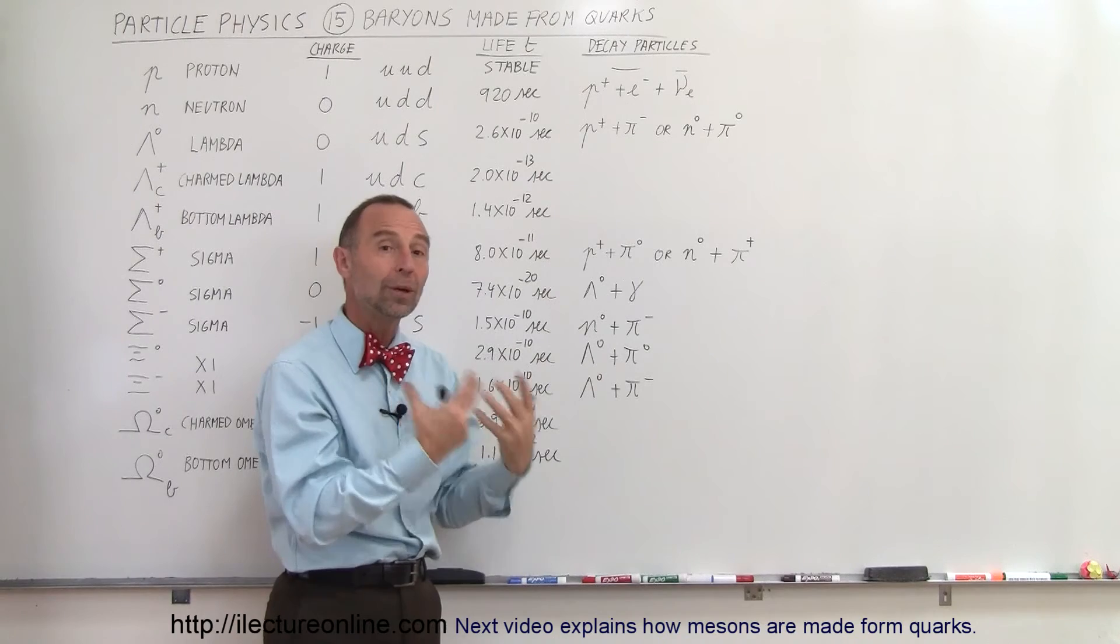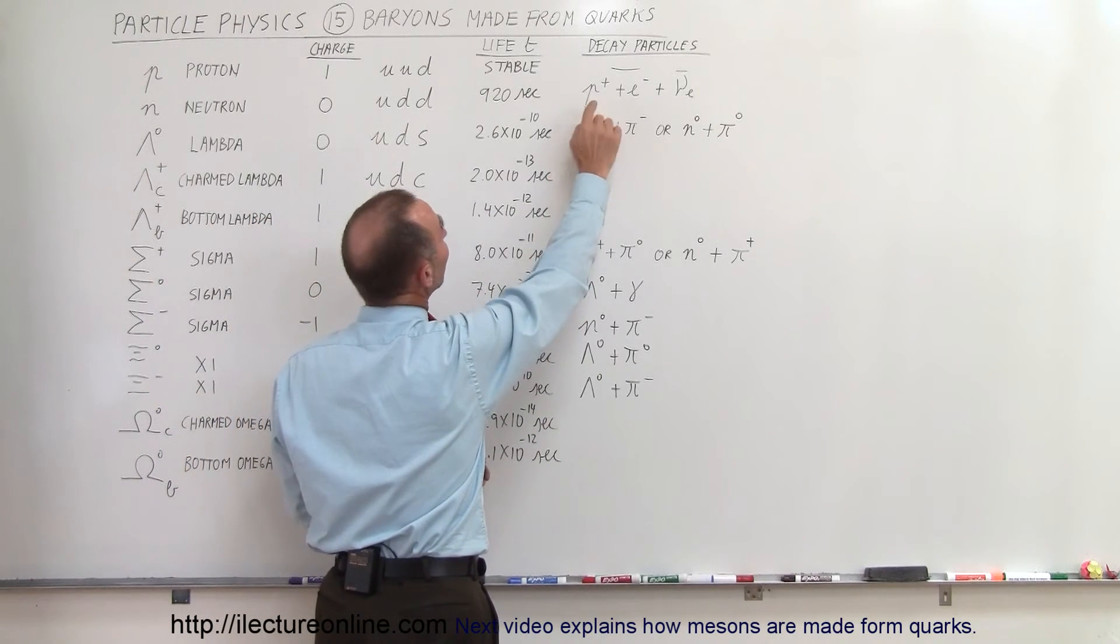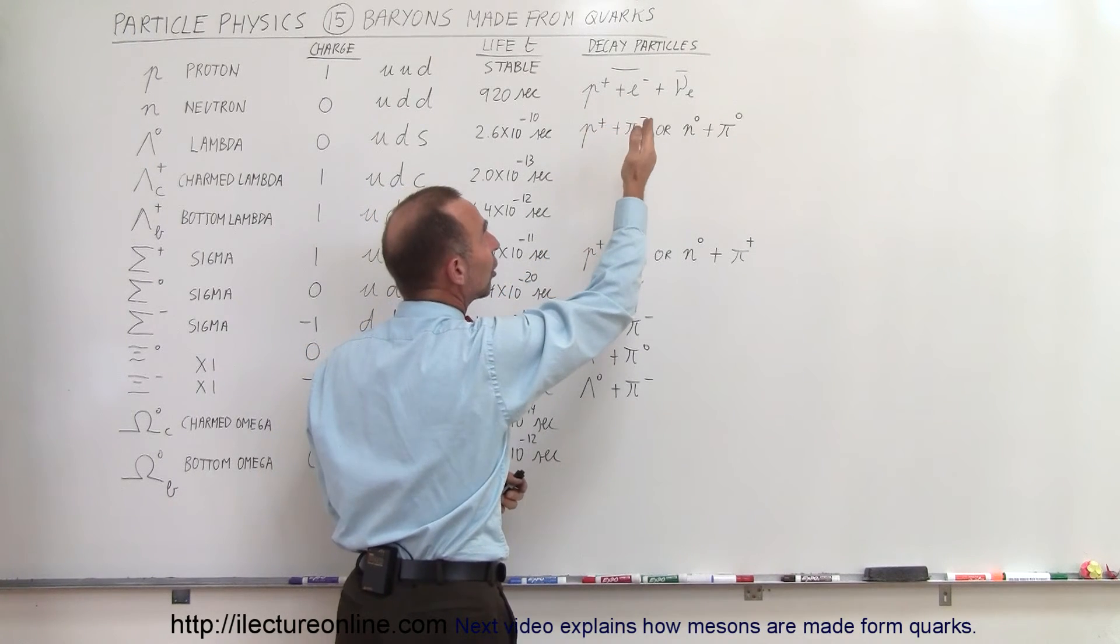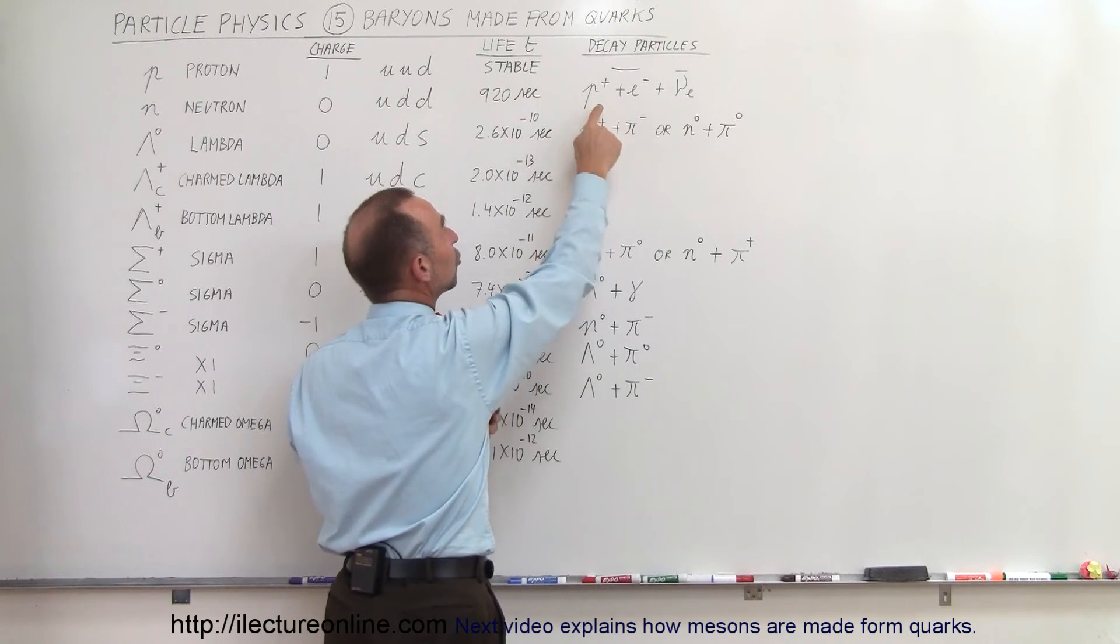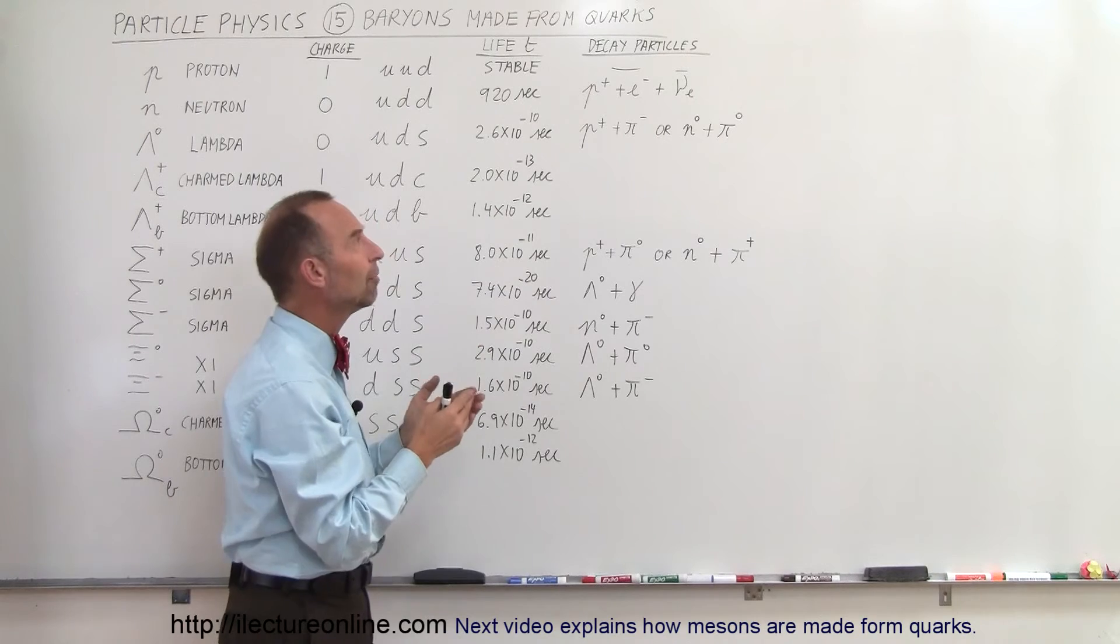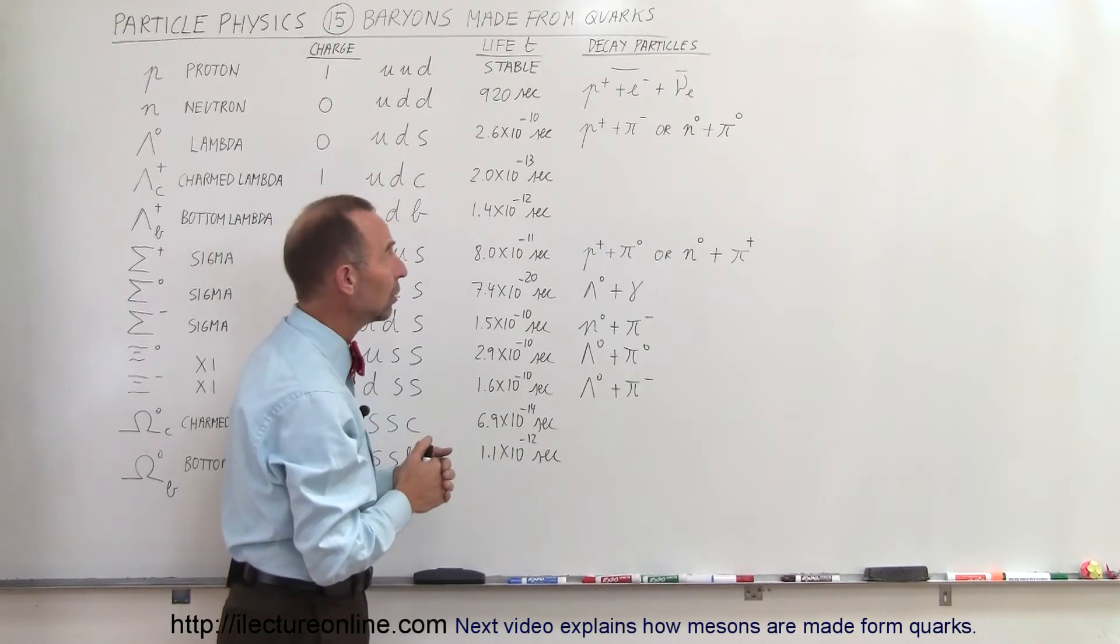For example, when a neutron decays, it forms a proton. It shoots out the negative charge from the neutron so that the neutron becomes a positively charged proton, and it also shoots out some energy in the form of what we call an anti-neutrino, an anti-electron neutrino.